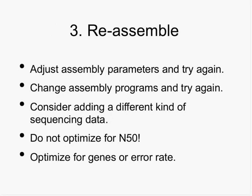You might want to reassemble your genome — you don't want to do it just once. You can adjust assembly parameters within your specific program, change assembly programs, or consider adding a different kind of sequencing data; perhaps you've been working with Illumina and decide to add some PacBio. One thing you don't want to do is optimize for N50. N50 is just an artificial metric of assembly quality and doesn't correlate well with actual quality. You really want to be looking for whether you have the genes you expect, and a low error rate.